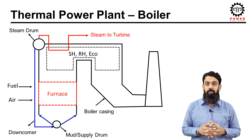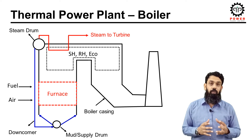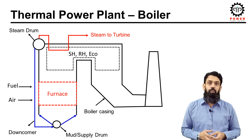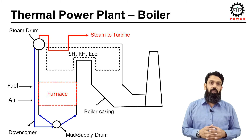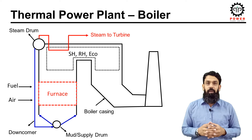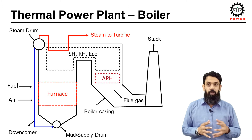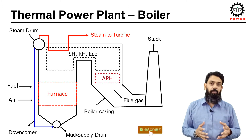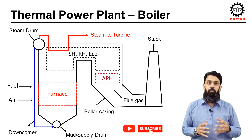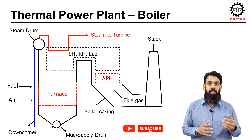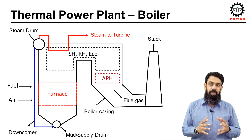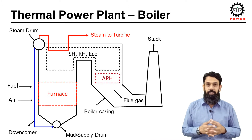The mud drum or supply drum equalizes the distribution of water into the water walls of the furnace. Flue gases, after transferring heat to the tube bundles, flow through the air preheater, whose main function is to preheat the combustion air for the boiler. After passing through the air preheater, flue gases are discharged into the atmosphere through the boiler stack. This was the basic and general understanding of the boiler and its configuration; we will discuss the boiler in more detail in upcoming sessions.